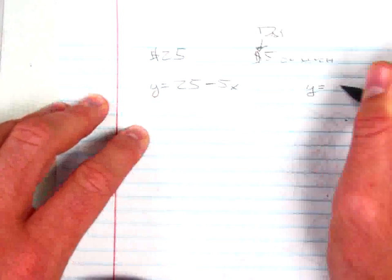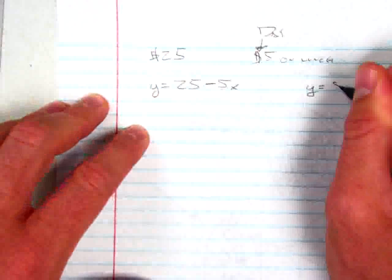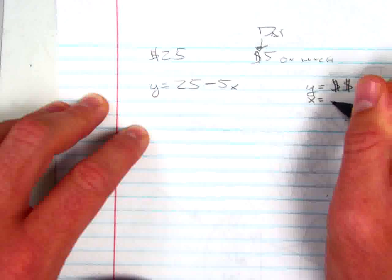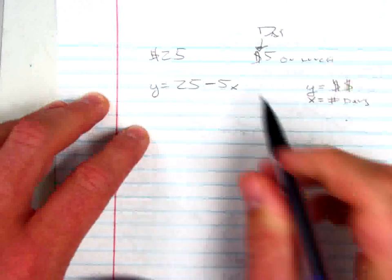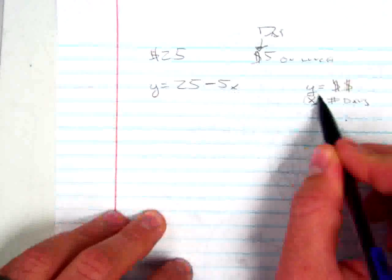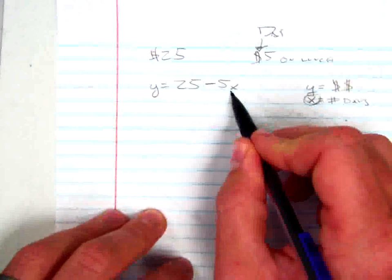Y, or my dependent variable, is the amount of money I have left. X, or my independent variable, is the number of days that have passed. And so, the reason our domain, or in other words, the x values we can use is limited in this situation, is because I'm eventually going to run out of money.